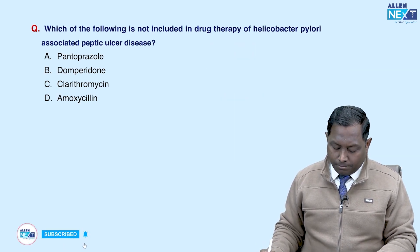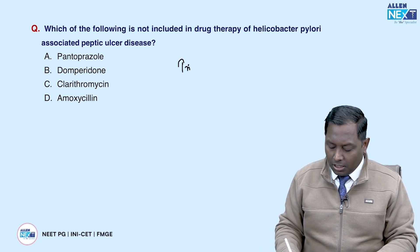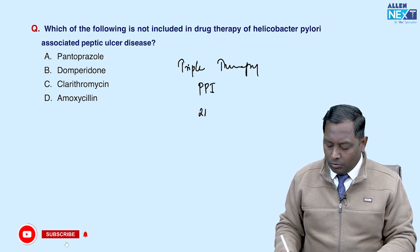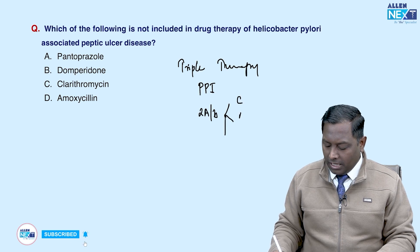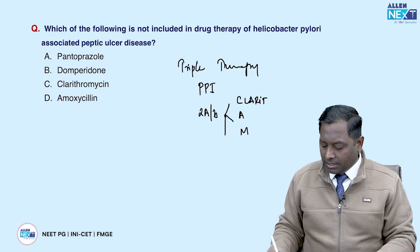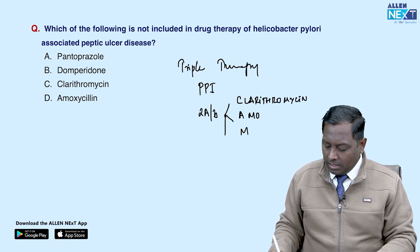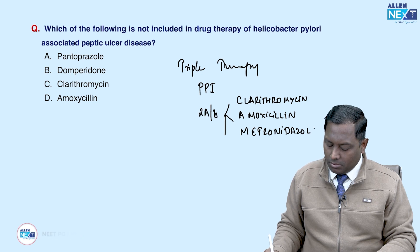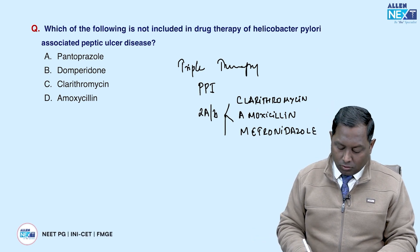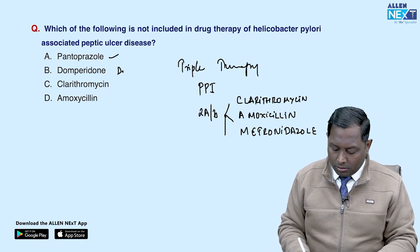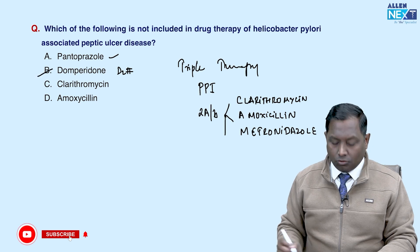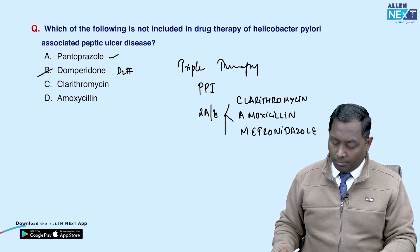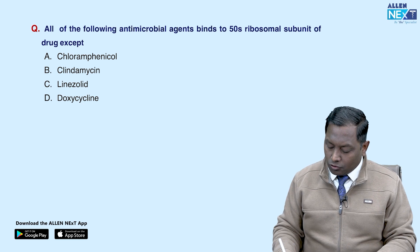Which of the following is NOT included in the drug therapy of H. pylori-associated peptic ulcer disease? We use either triple or quadruple therapy, which includes a PPI and two antibiotics. The antibiotics come from CAM: clarithromycin, amoxicillin, and metronidazole. Domperidone is a D2 blocker and prokinetic agent — it has no role in H. pylori eradication therapy. So domperidone is the answer.